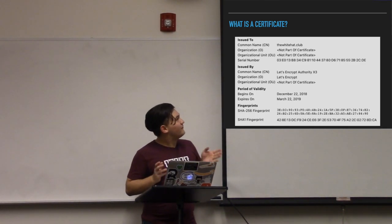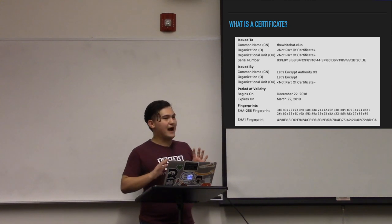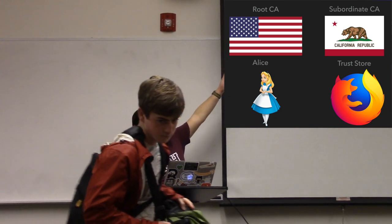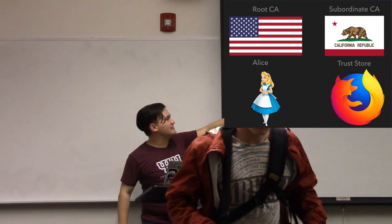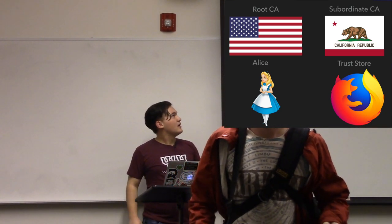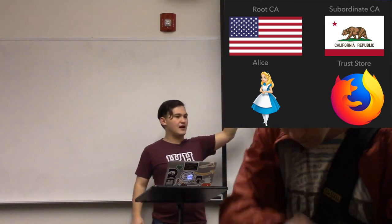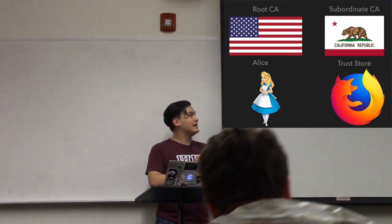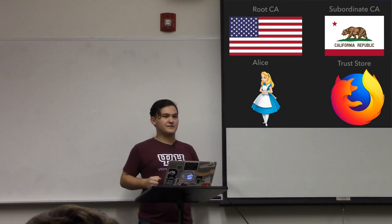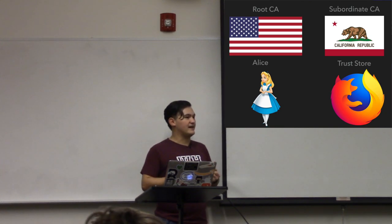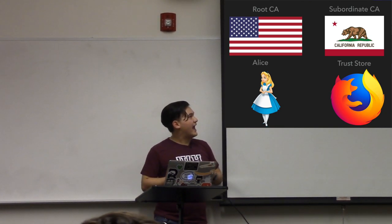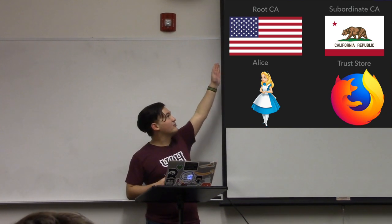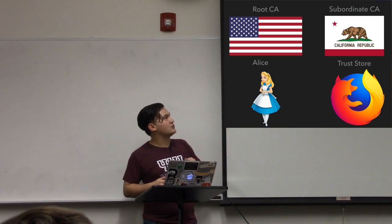So before I get into how exactly these certificates are issued, let's go over some actors. First you have a root CA, you have a subordinate CA, you have Alice, and you have a trust store. The trust store is something that is either provided by your browser or your OS that says these are the certificates that we have personally vetted and that we trust. And hopefully when you visit a website, whatever is at the root of the certificate chain will be in that trust store.